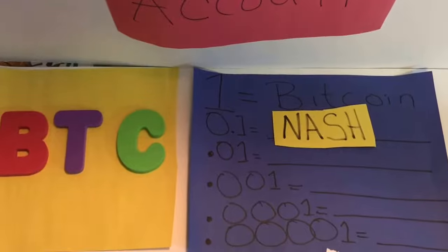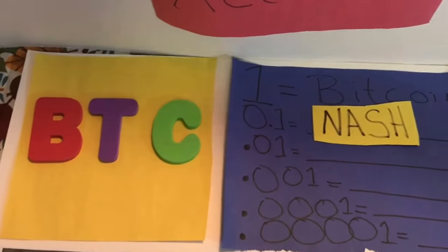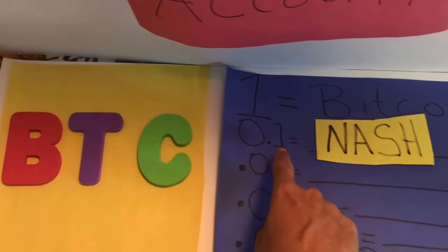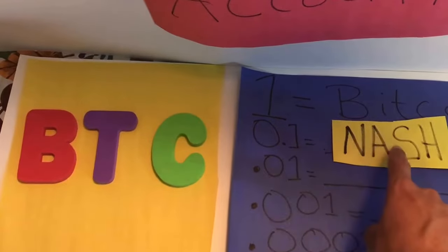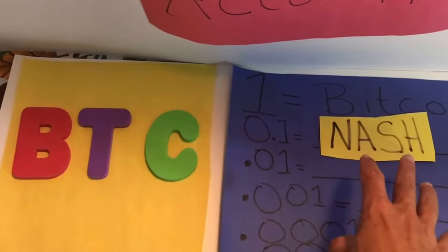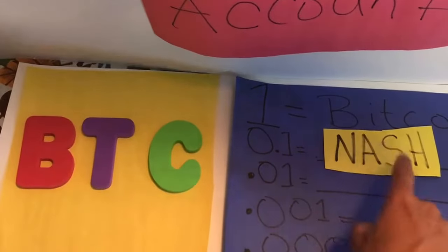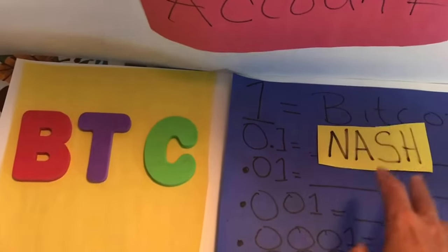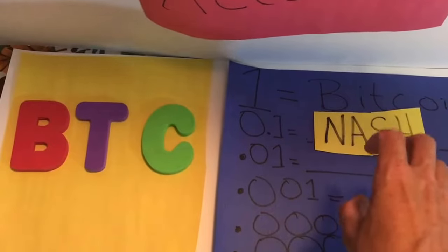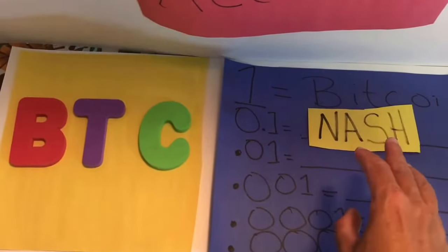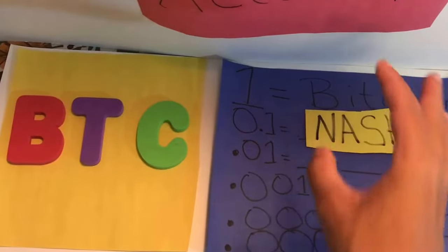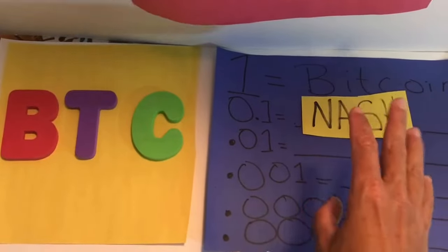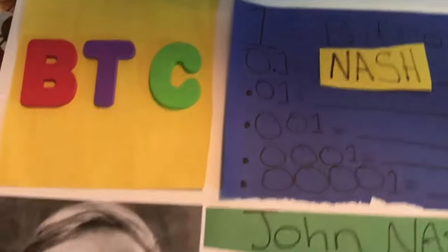These are my thoughts on labeling the decimal point designations. I propose naming the first decimal point — 0.1 BTC — a 'Nash.' It's easy to say, easy to understand, and doesn't get confused with Bitcoin, satoshis, finneys, or bits. It centers the concept differently in your mindset compared to technical terms like 'millibit.'